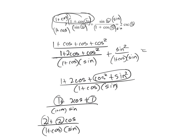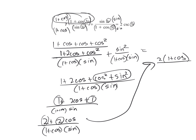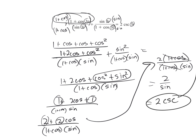Factor out a 2 from the top: 2 times 1 plus cosine. On the bottom, we have 1 plus cosine and sine. The 1 plus cosines reduce out, leaving 2 over sine, which is 2 cosecant. That's what we have.